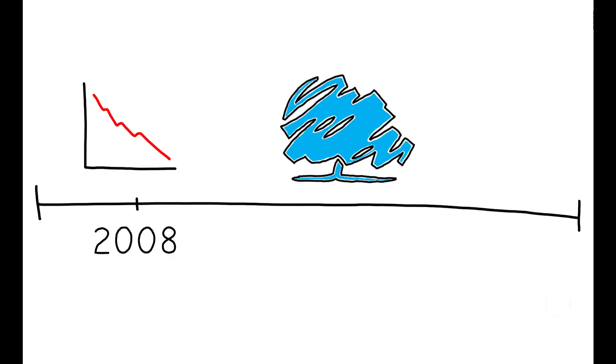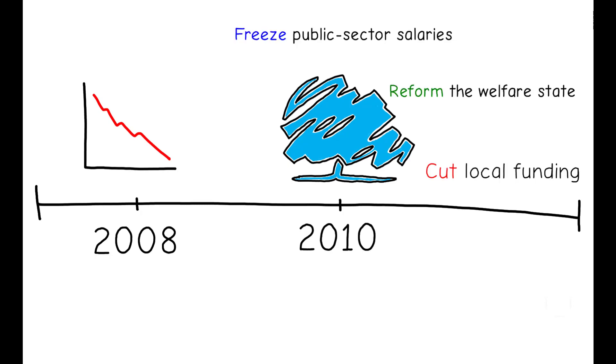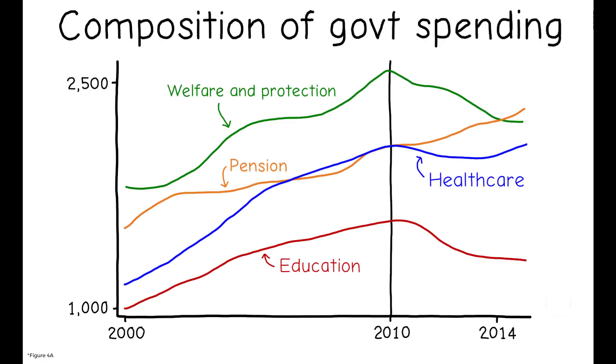To provide some background, in the wake of the financial crisis, a Conservative Party-led coalition came to power in May 2010 and enacted a range of austerity measures aimed at reducing public sector deficits. The magnitude of these welfare reforms was substantial.